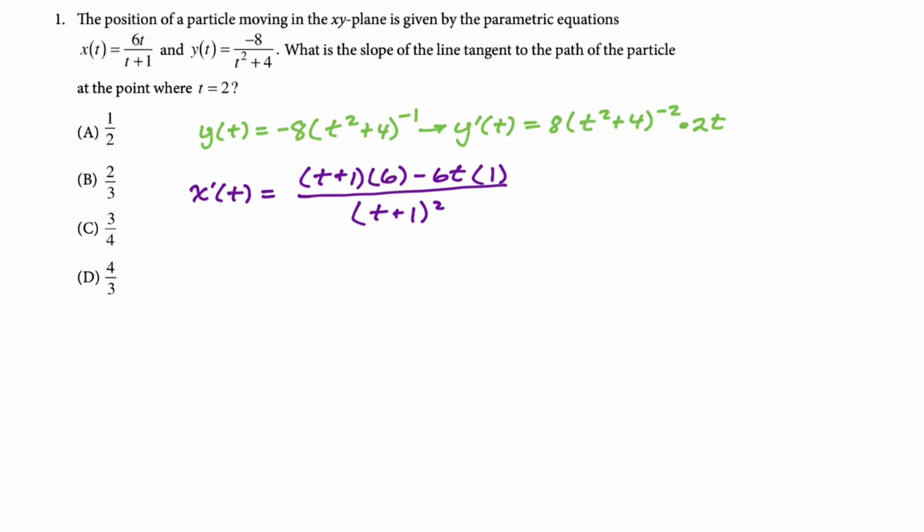We have to evaluate both of these at 2. So we will have y prime of 2 is going to be, you get 8 times 4 and then I'm bringing that back into the denominator. So 4 plus 4 squared. 4 plus 4 is 8. So you really have 8 over 8 squared which is 1 over 8 and then you have that times 4. So 4 over 8 is just 1 half. We have to find x prime of 2. So x prime of 2 just sub in. You get 3 times 6 minus 2 times 6 over 3 squared. 18 minus 12 is 6 and then 3 squared is 9. So we have 6 over 9 which is 2 thirds.